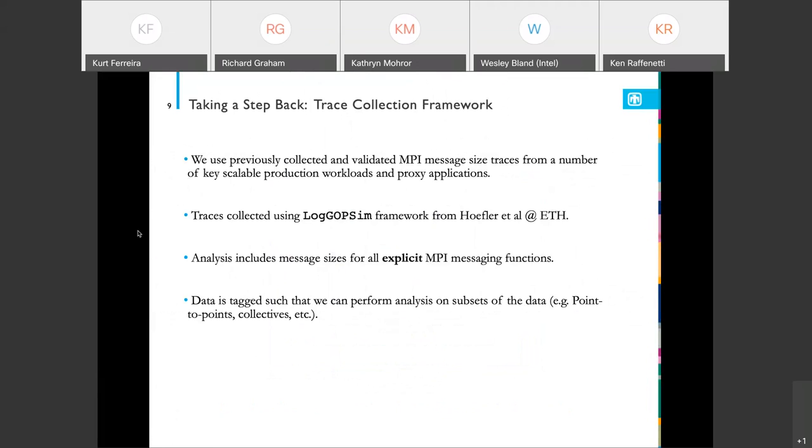Taking a step back, I showed you this message data from previously collected and validated message traces. We have a bunch from a number of key scalable production workloads and proxy applications. These traces were collected using the LogGOPSim framework from the folks at ANL. It's important to note that this analysis includes all explicit messages. As many on the call are aware, there are some functions within MPI that may do some implicit messaging. For example, creating a new communicator may send around a context ID. All the implicit messaging is not included in the analysis. It's only explicit MPI messaging.